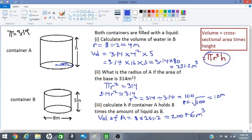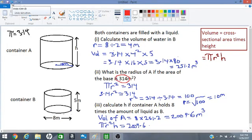Let us now use our formula, pi r squared h. So we have pi r squared h is equal to 2009.6. We know that pi r squared for container A must be equal to 314. We know that it is the area of the base.